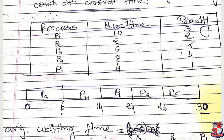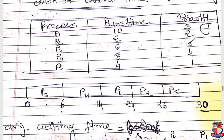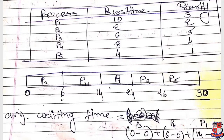Next, the largest remaining priority value is 4, so P4 is selected. 6 plus burst time of P4 which is 8 gives 14. Then the next largest priority value is 3, so P1: 14 plus burst time of P1 which is 10 gives 24. Then priority value 2, so P2: 24 plus 2 gives 26. Finally P5 with priority 1: 26 plus 4 equals 30. The Gantt chart is created based on this priority order.